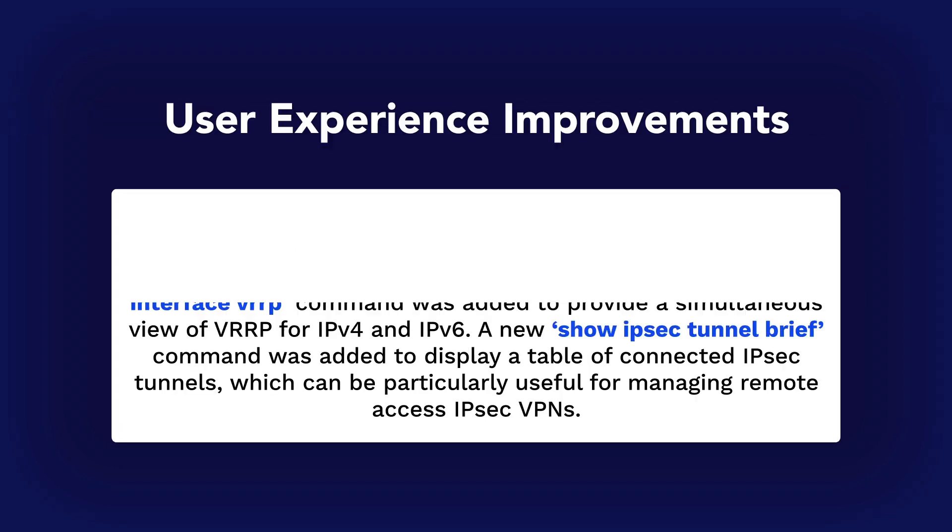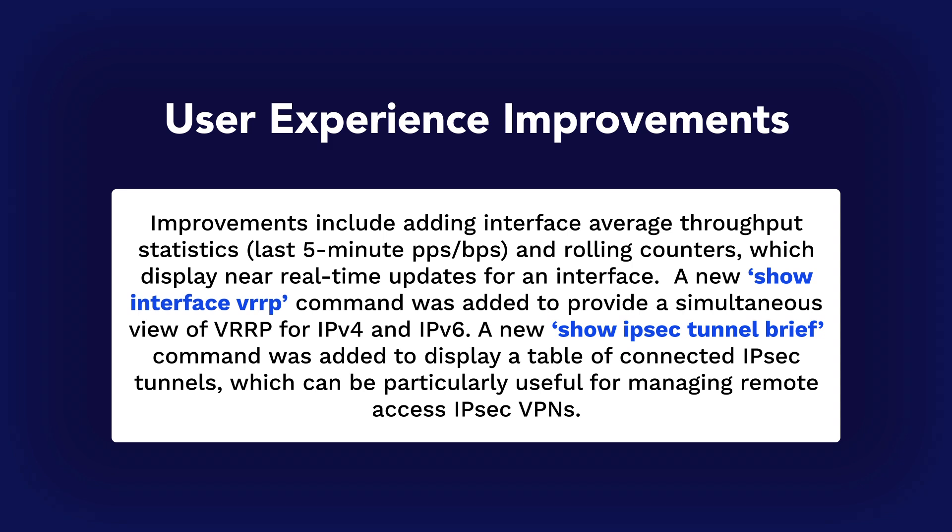We've made several improvements to enhance your user experience. You can now view interface average throughput statistics for the last five minutes, showing both packets per second and bits per second. We've also introduced rolling counters for near real-time updates. A new command, show interface VRRP, allows you to simultaneously monitor VRRP for both IPv4 and IPv6. Additionally, the new show IPsec tunnel brief command displays a handy table of connected IPsec tunnels, perfect for managing remote access IPsec VPNs.